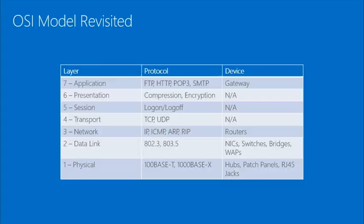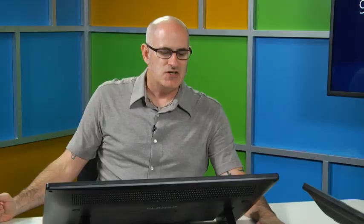The OSI model revisited: application, presentation, session, transport, network, data link, and physical. We see the different protocols associated with each layer and the devices at each layer. One interesting geek fact: TCP and IP are at different levels — people think they're opposite sides of the same thing, but TCP is a portion of the transport protocol and IP is a portion of the network protocol.